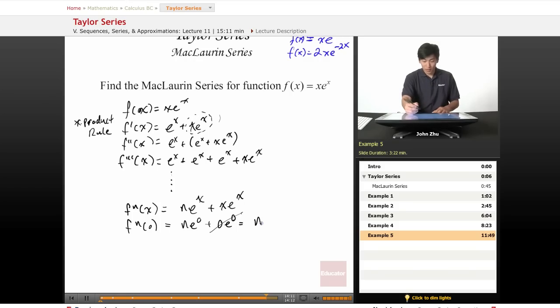So once again, if f to the nth order derivative of 0 equals n, then we can apply it directly to our Maclaurin series equation or formula.